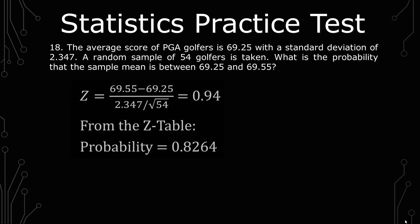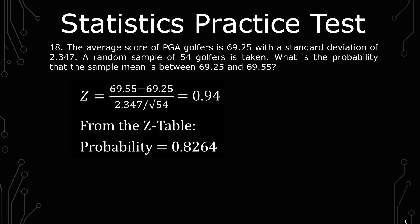The first calculation we have is 69.55 minus 69.25, over 2.347 divided by the square root of 54, which gives us a z-score of 0.94. And from the z-table we have a probability of 0.8264.